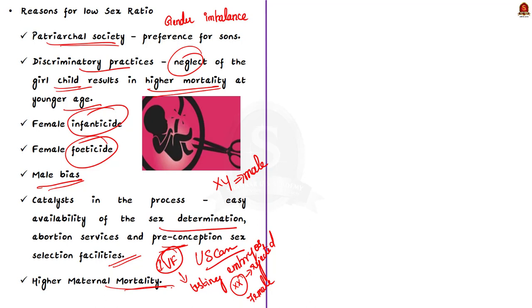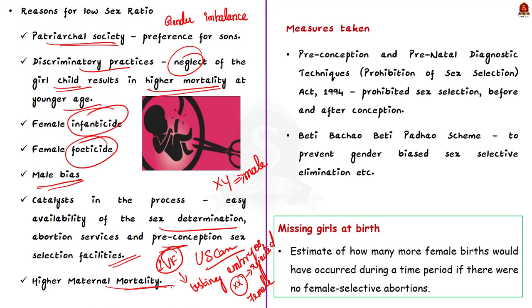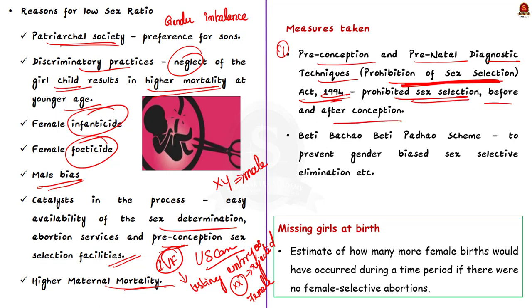All these reasons affect the survivability of the girl child and cause low sex ratio. The government has taken many steps to criminalize practices against having a female child. One key step was the enactment of the Pre-Conception and Pre-Natal Diagnostic Techniques (Prohibition of Sex Selection) Act in 1994, which prohibited sex selection before and after conception and regulated prenatal diagnostic techniques. Another step was Beti Bachao Beti Padhao — meaning 'Save the girl child, educate the girl child' — which aims to address the declining child sex ratio and issues of empowerment of girls, including preventing gender-biased sex selective elimination and ensuring survival and protection of the girl child.